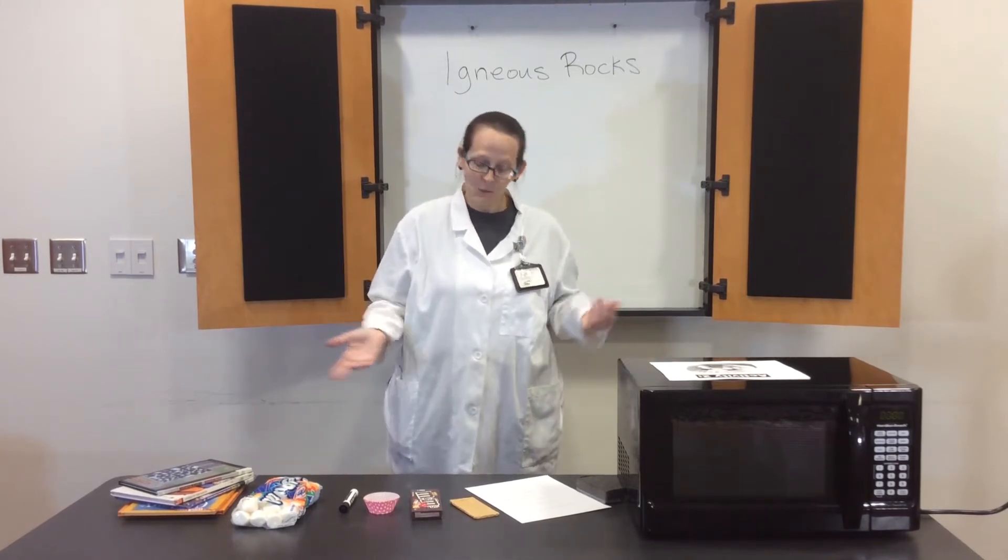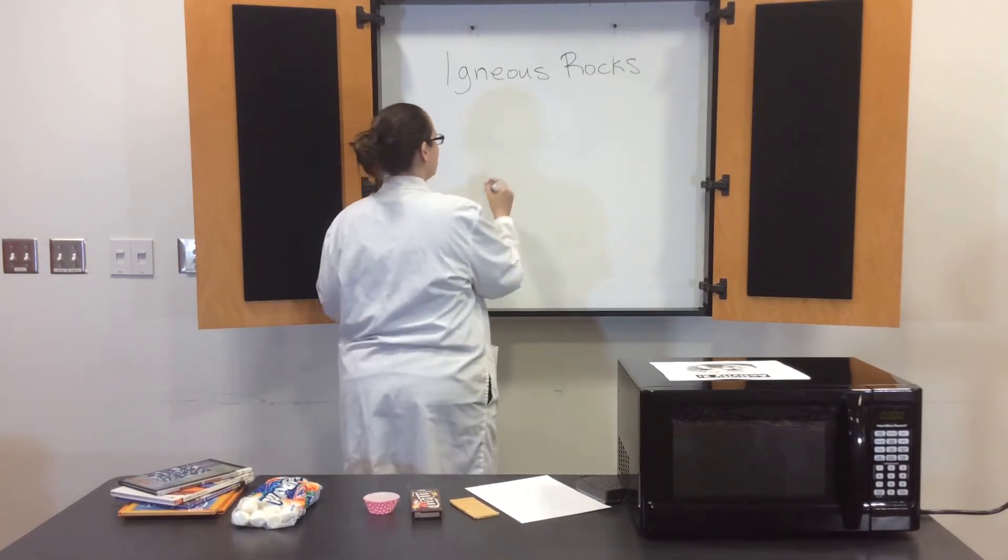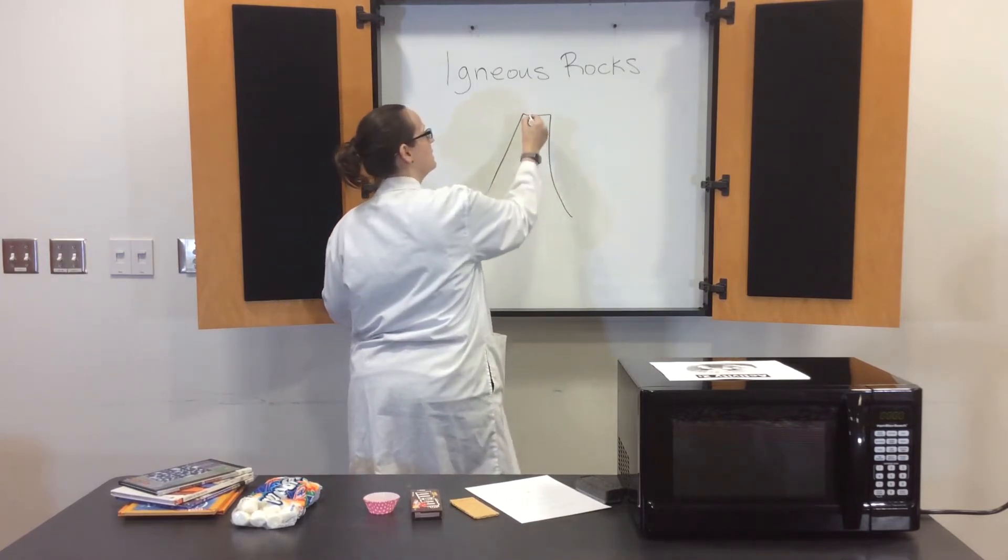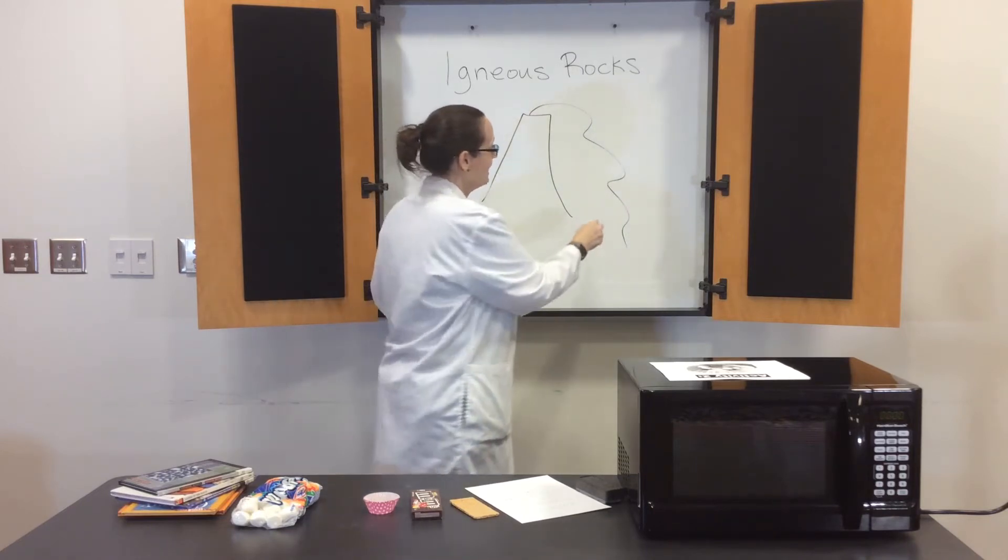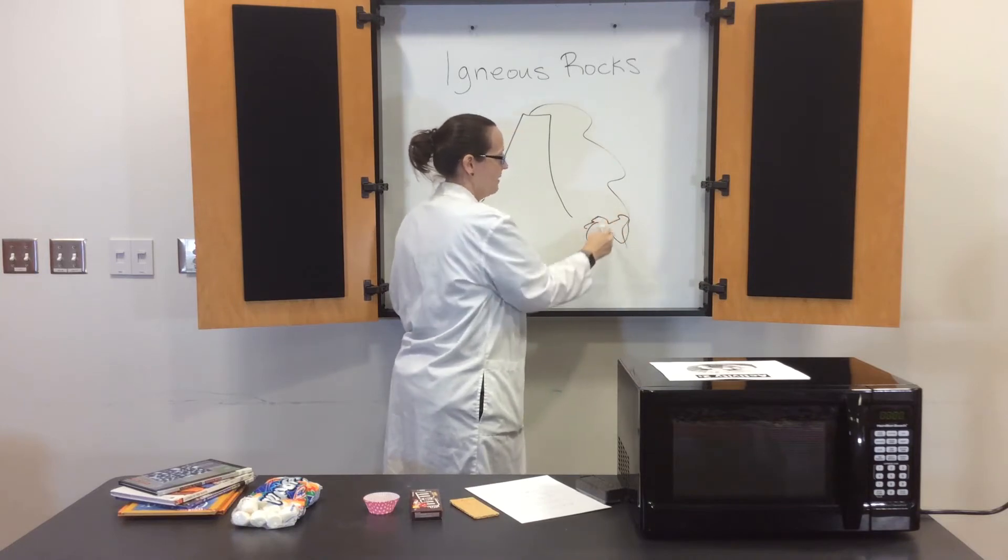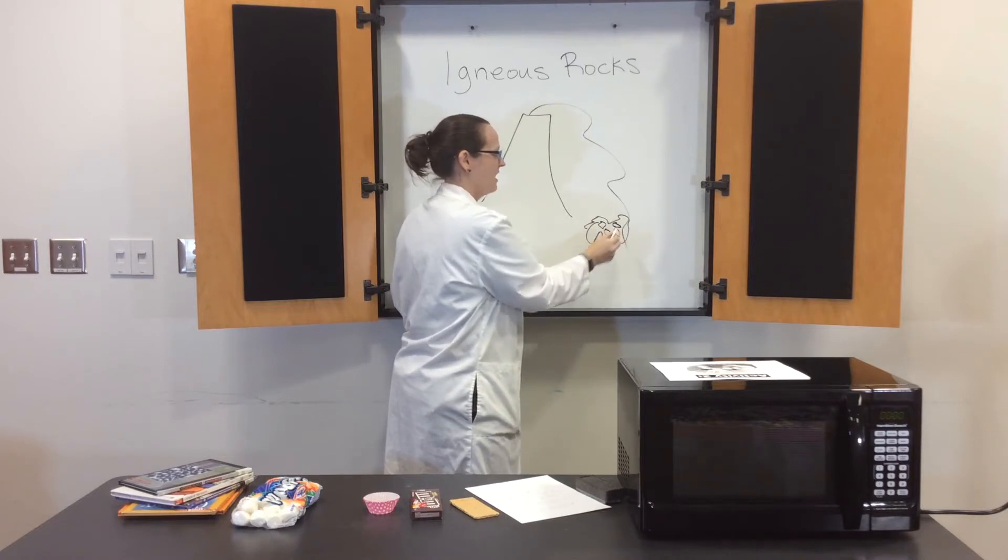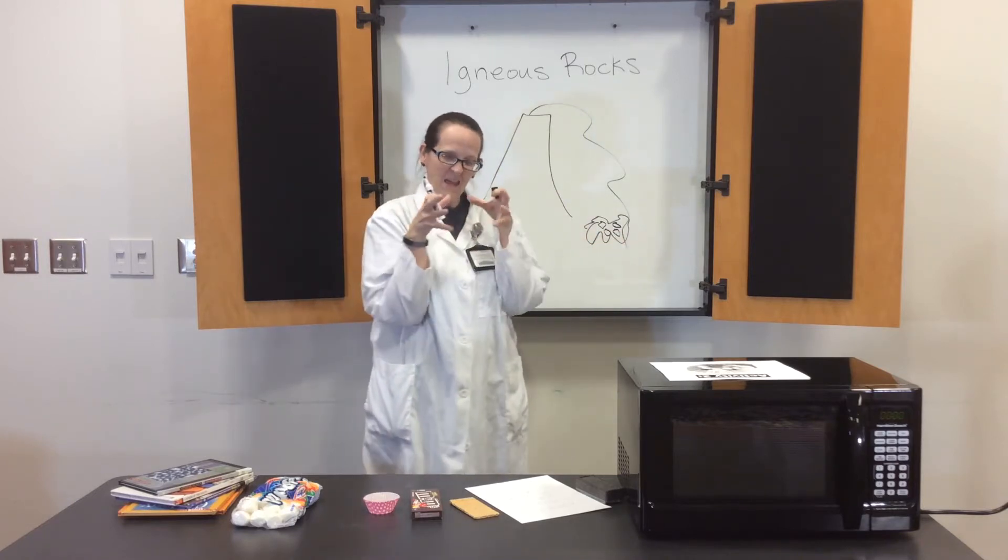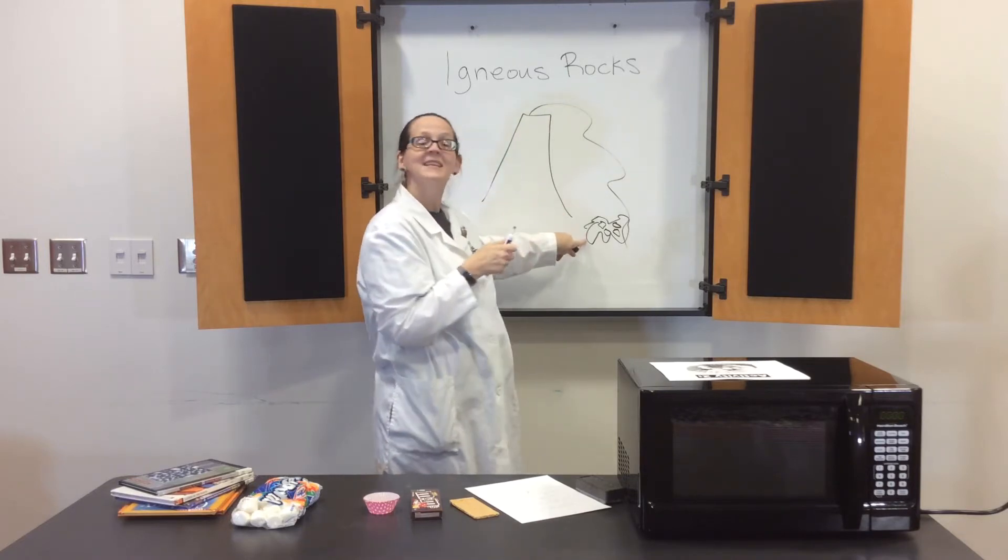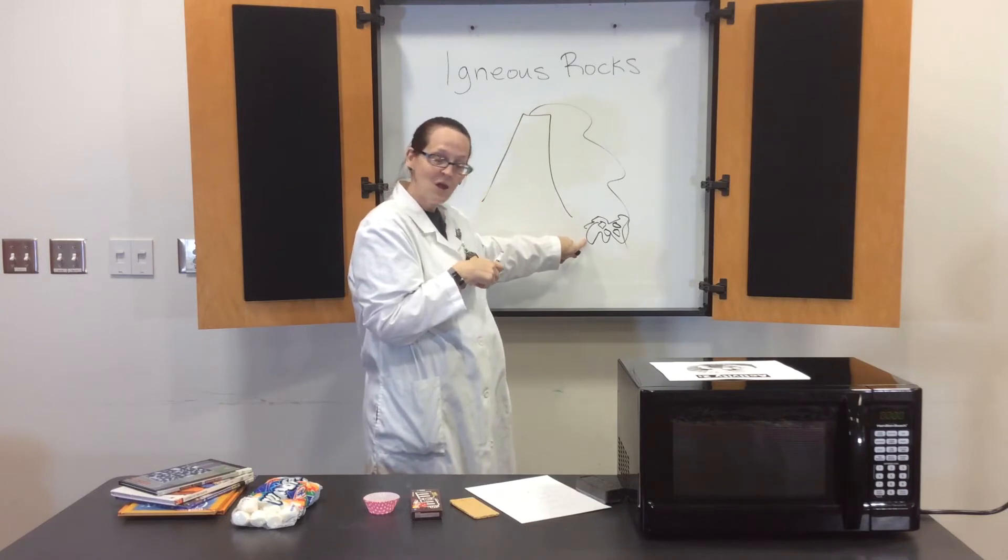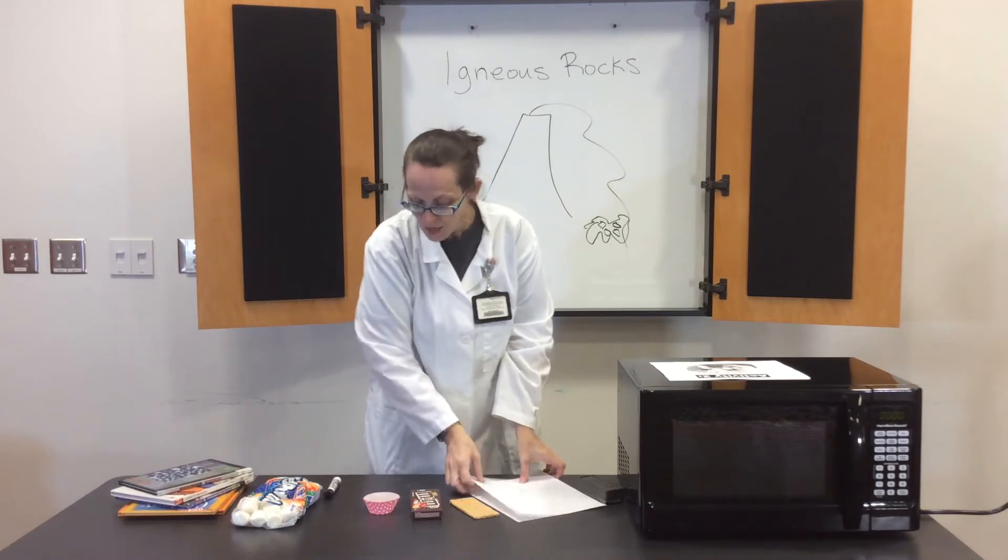You guys may be wondering: what are igneous rocks? Well, igneous rocks are made from volcanoes. So you've got a volcano here, and then when the lava comes out, it's going to go down here. You have the lava and you have little bitty rocks in it, and they all kind of come together and they melt. Then when they cool, that is an igneous rock.